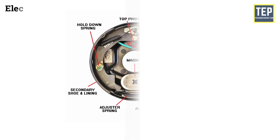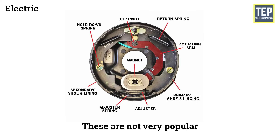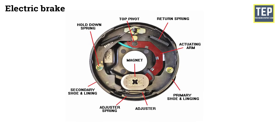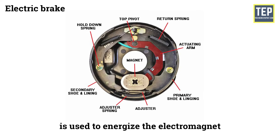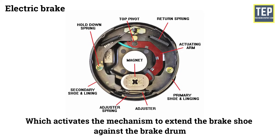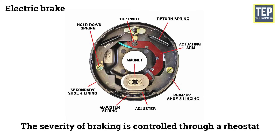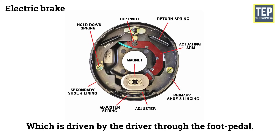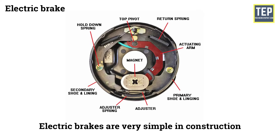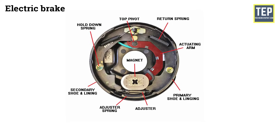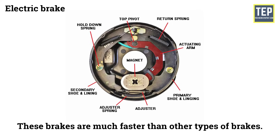Electric brake. Electric brakes are also used in some motor vehicles, but these are not very popular. These types of braking system have an electromagnet within the brake drum. The brake is activated when current from the battery energizes the electromagnet, which extends the brake shoe against the brake drum, and thus the brake is applied. The severity of braking is controlled through a rheostat, which is driven by the driver through the foot pedal. Electric brakes are very simple in construction and don't require any complicated operating system. These brakes are much faster than other types of brakes.